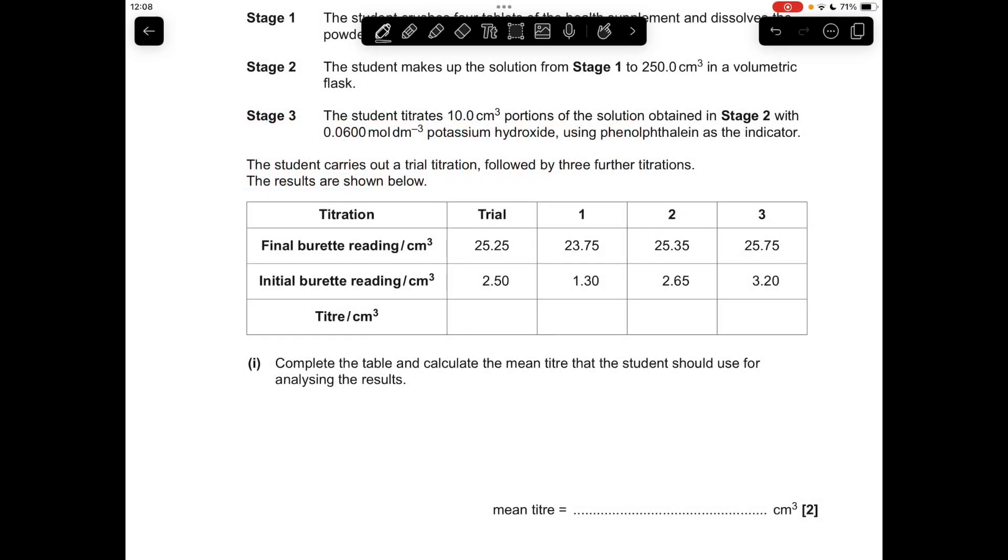Okay, so making a start, the first thing I do is pop the titre results in the table, so we're just taking the initial burette reading away from the final. So there they are. You'll see I've highlighted that zero there because the number of times I would mark exam papers and that's missing, you wouldn't believe. So that has to be there.